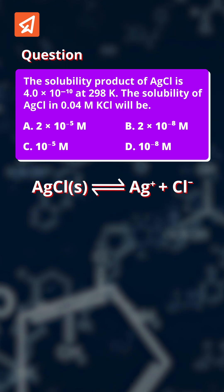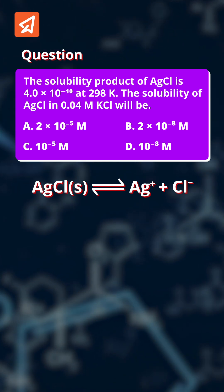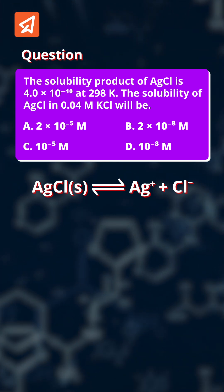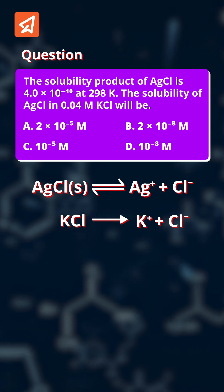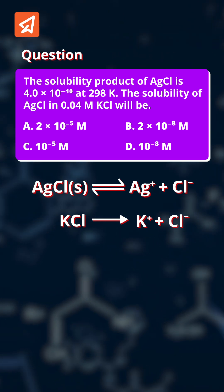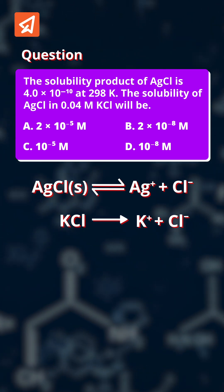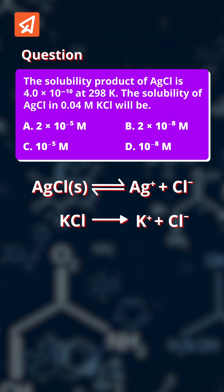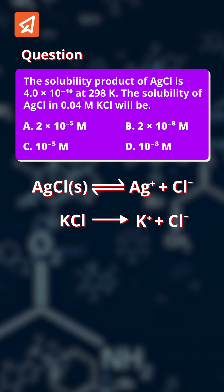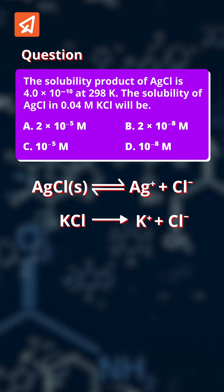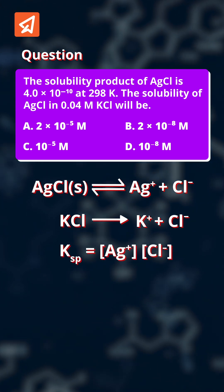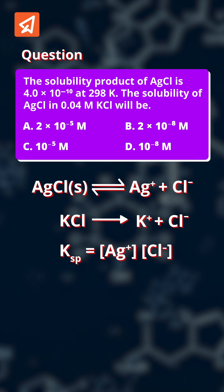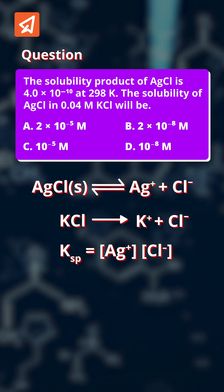The chloride ion is common to both the strong electrolyte potassium chloride and the weak electrolyte silver chloride. So the chloride ion concentration comes from the strong electrolyte KCl. The solubility product equals [Ag⁺] × [Cl⁻].